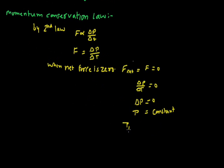When momentum is constant, it means the initial momentum of the system is equal to the final momentum of the system. Let's look at an example of this.